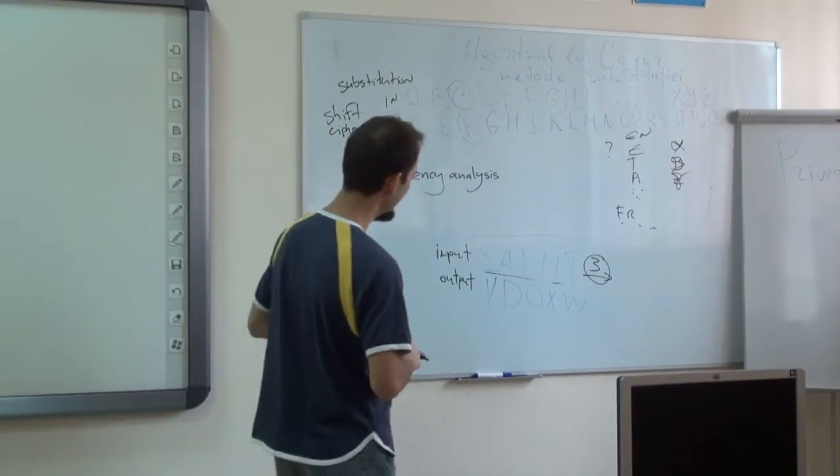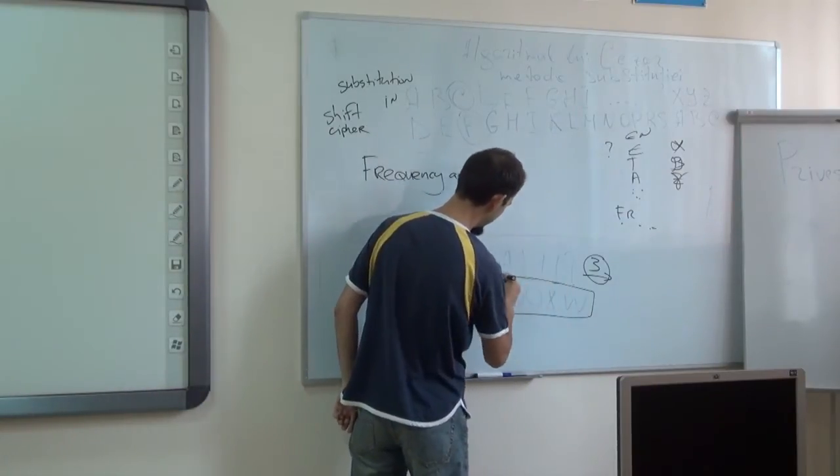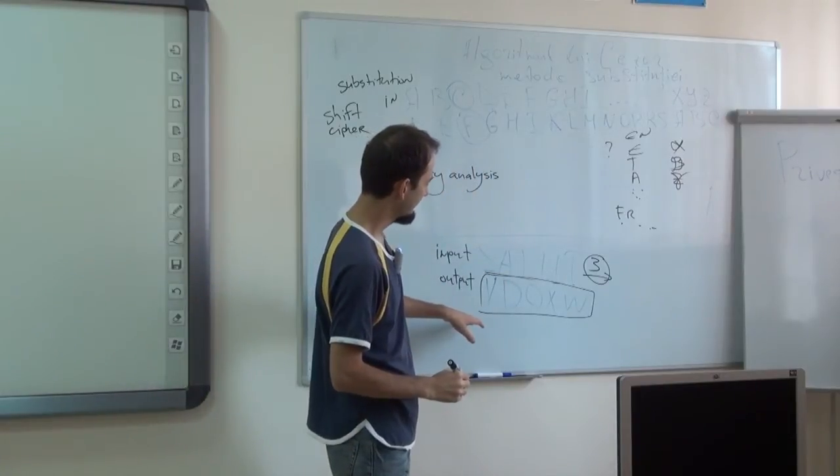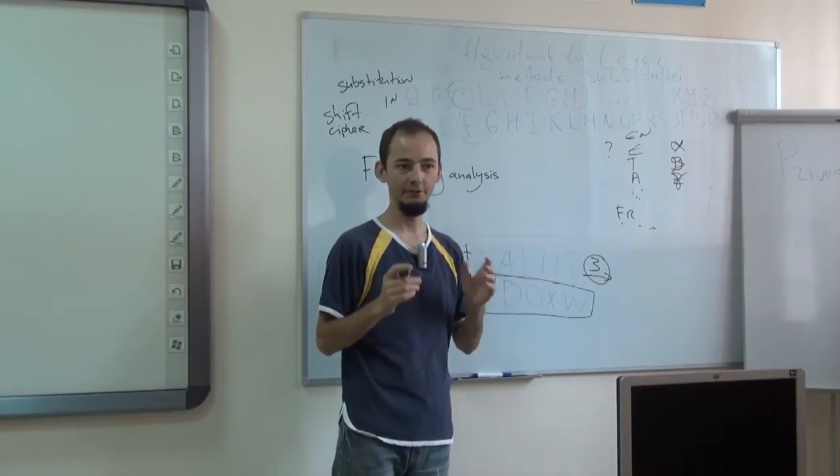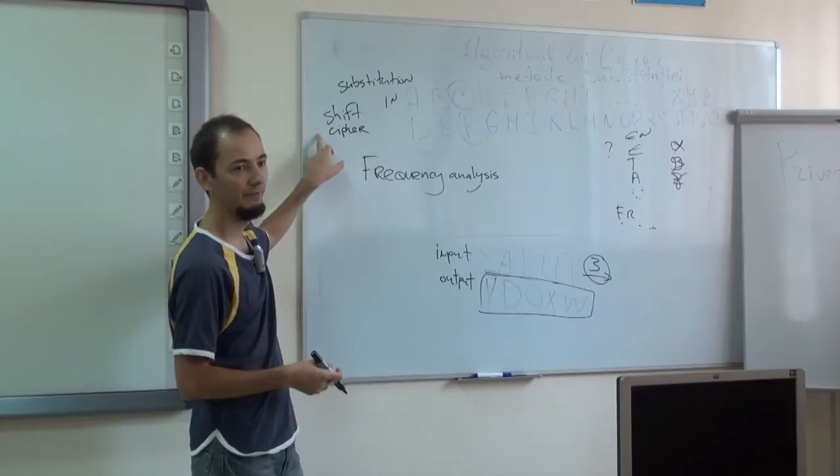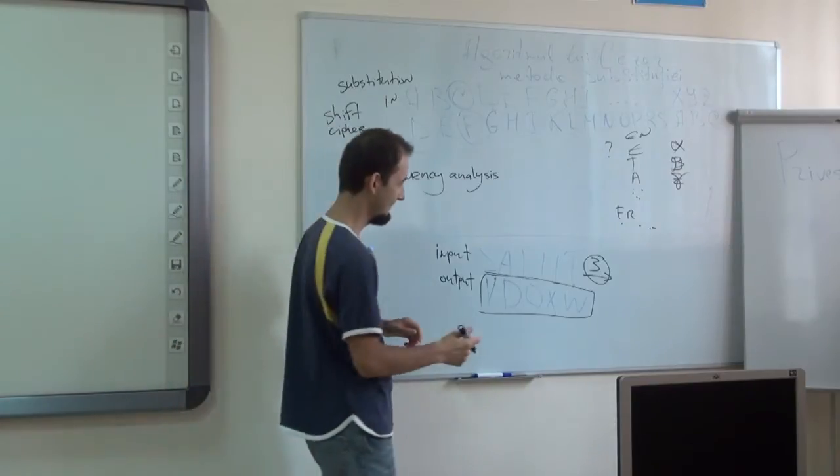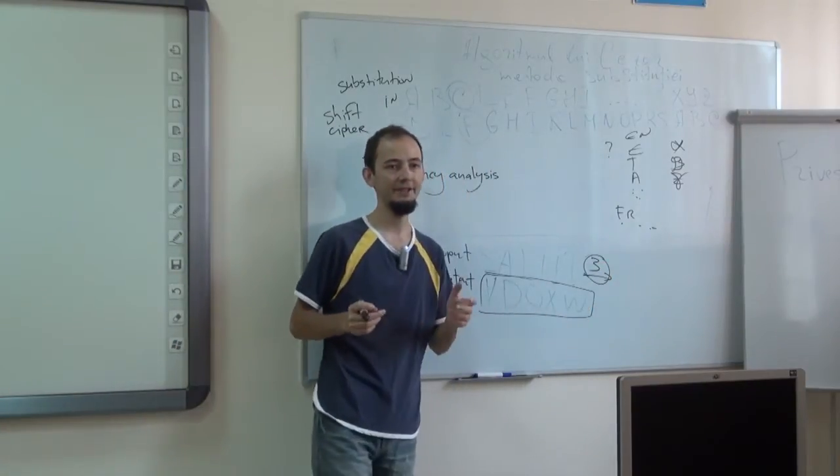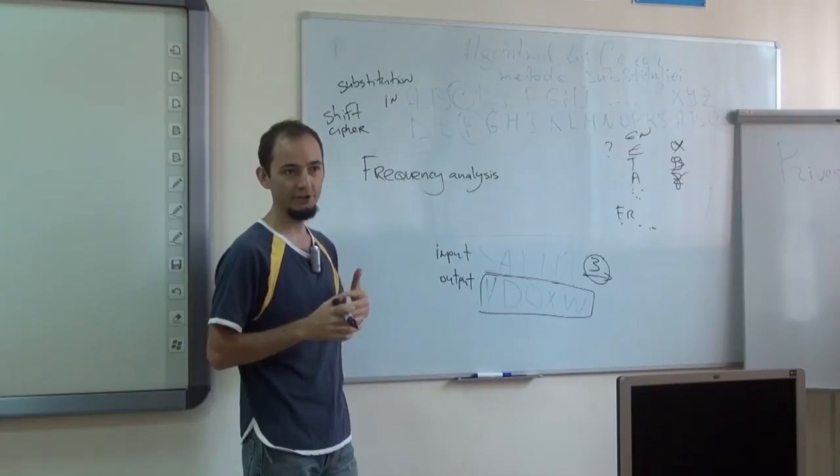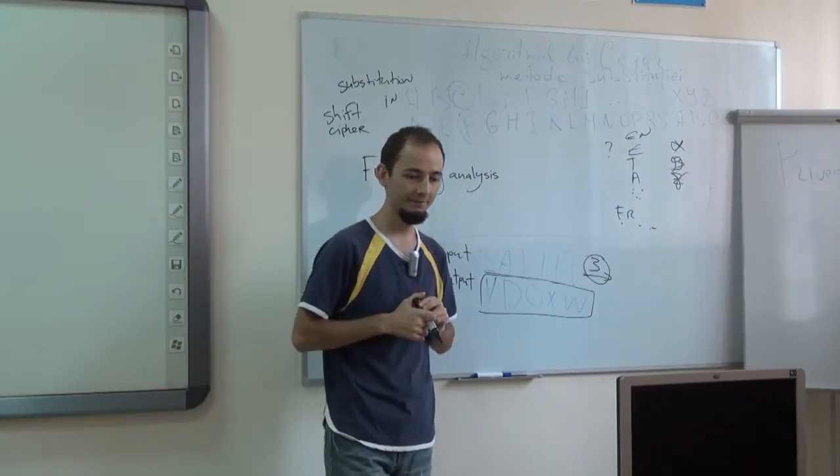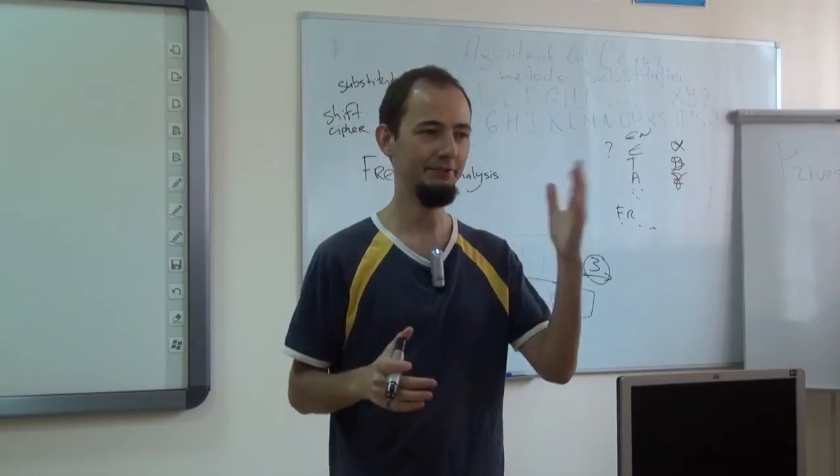Now, imagine that you are looking at a string. Okay, let's say you have a long piece of text that you know has been encrypted with a shift cipher. You don't know what the secret key is. In this case, it was 3. In another case, it could be another number. But you know it's a shift cipher. What things will you notice when you look at that text carefully and you do some counting?